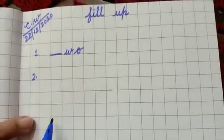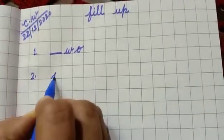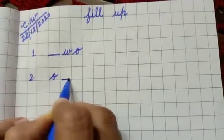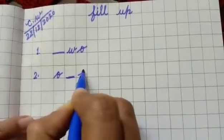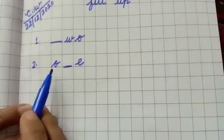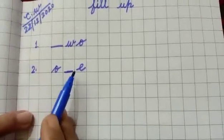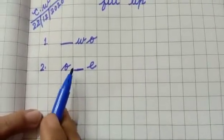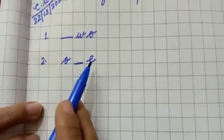Number two. O dash E. So what you will write here? You will write here N. O N E, 1. Okay.